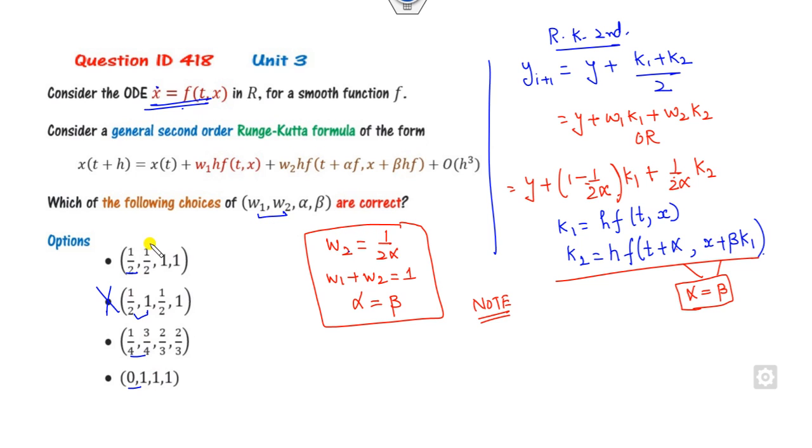W2 is 1/(2α). For the second option, alpha is here, so that's satisfied. For the third option, 3/4 is W2, and 1/(2α) with alpha = 2/3 is also satisfied. Alpha equals beta in all cases: alpha is beta, alpha is beta. But for option D, W2 is 1 and alpha is 1, which is not equal to 1/(2α). So this option is cancelled.